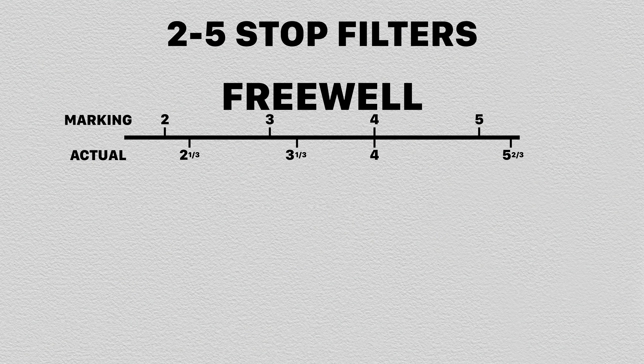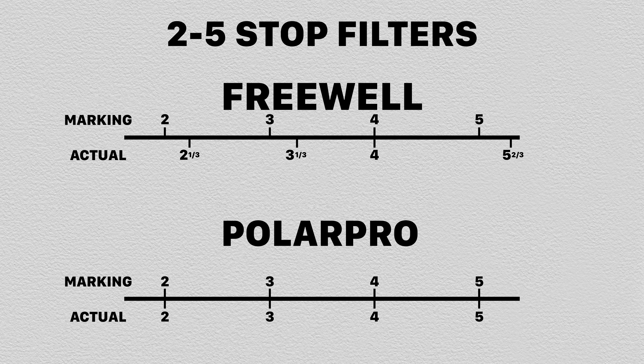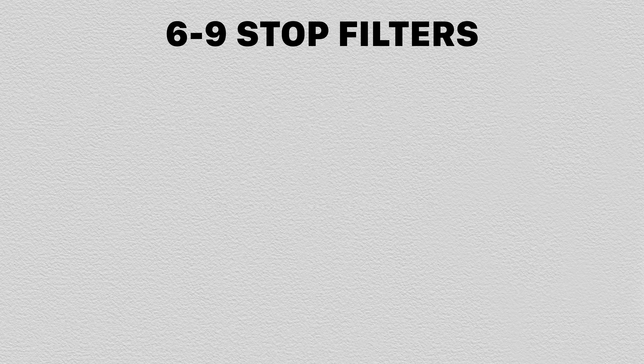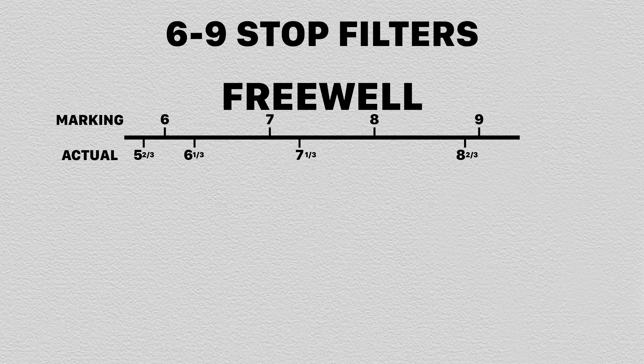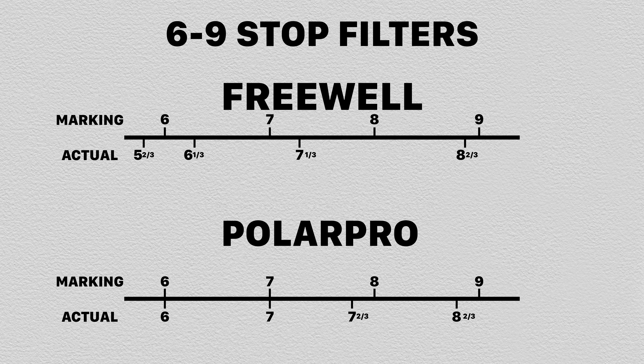I also wanted to see how accurate the different stop markings were. The Freewell two-to-five stop filter ranged from two-and-a-third stops at the two-stop marker to five-and-two-thirds stops at the five-stop marker, whereas the PolarPro markers were dead on to what they said. The Freewell six-to-nine stop ranged from five-and-two-thirds to eight-and-two-thirds stops. The PolarPro was dead on for the six and seven stop markers, and a third of a stop short the rest of the way, landing on eight-and-two-thirds stops as well. My test isn't perfect by any means, but the PolarPro was a bit more accurate here.